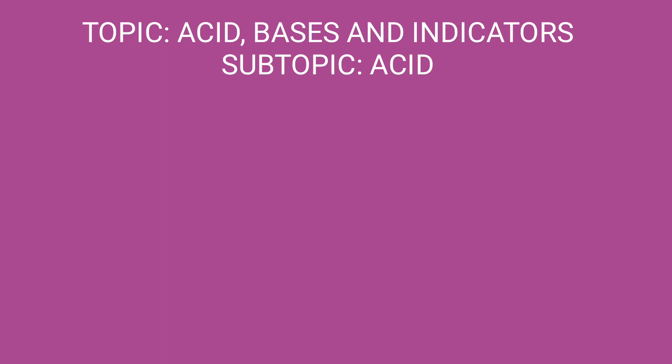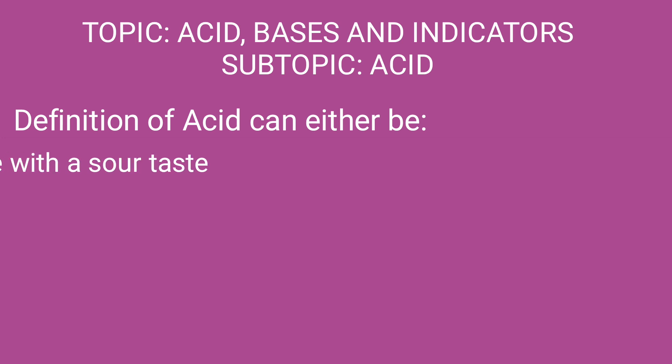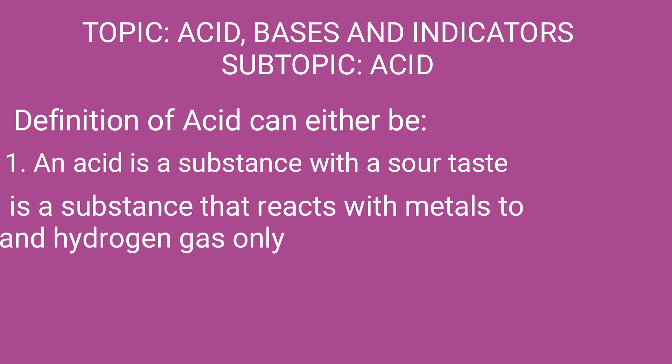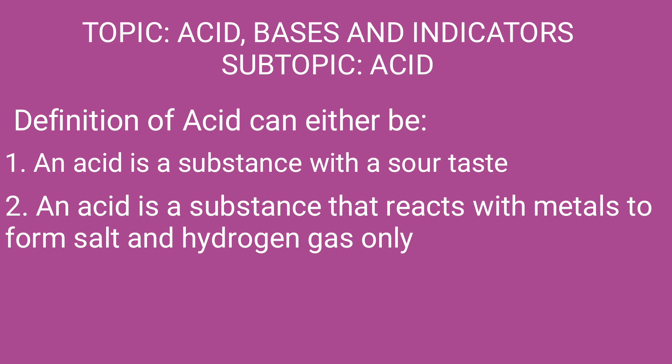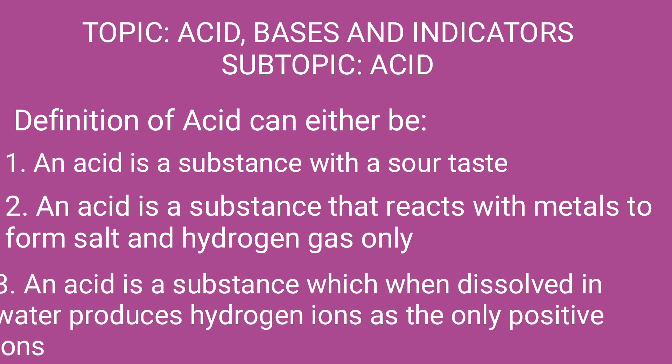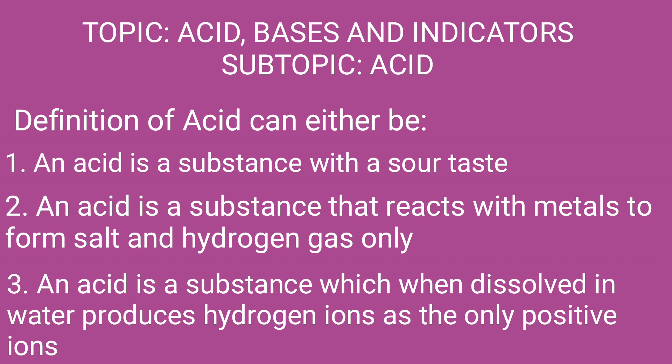Now we look by defining the term acids. Acid can be defined in three ways. It can be said an acid is a substance with a sour taste. We can also say an acid is a substance that reacts with metals to form salt and hydrogen gas. It can also be defined as a substance which in water produces hydrogen ions as the only positive ions.